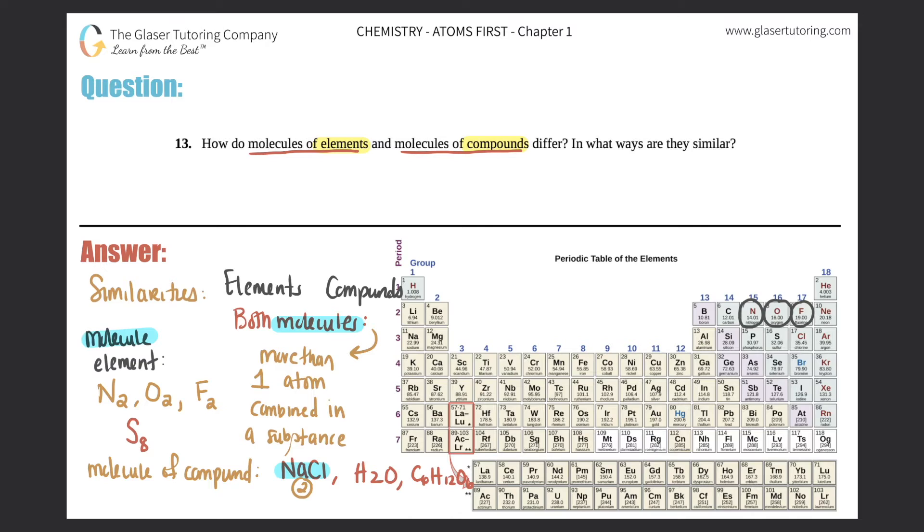I'm just going to put the two here because there's one Na and one Cl. In H2O, there's three total atoms—two hydrogens and one oxygen. And then C6H12O6, if you add six plus twelve plus six, you get 24 atoms. So that's a similarity: they will have more than one atom in their molecules, no matter if you're talking about a molecule of an element or a molecule of a compound. But now let's talk about what the differences are.